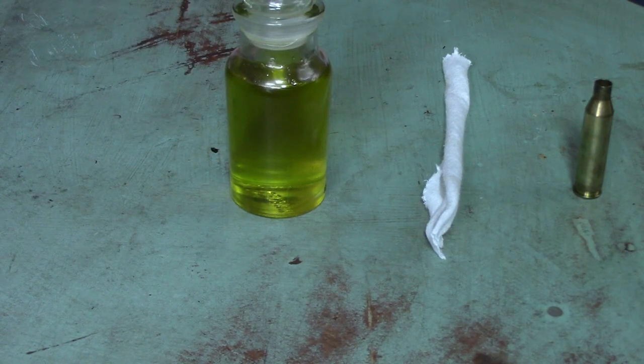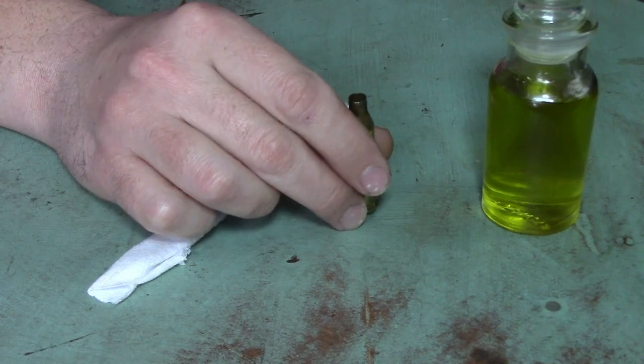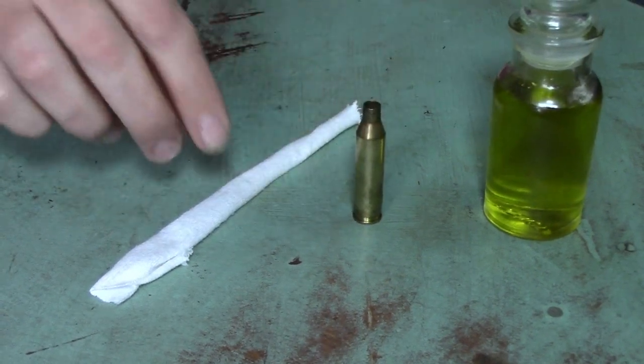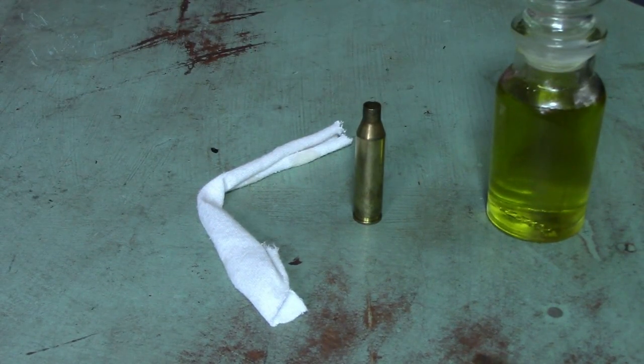So let's get started on this build. Our bullet cartridge is what holds our oil and our wick. The cotton is our wick. The oil is our fuel.